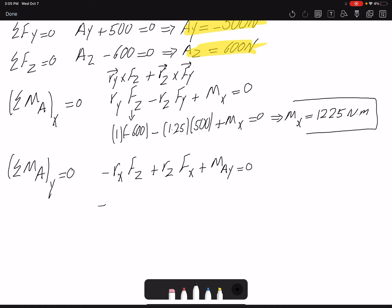Rx here, negative Rx would be negative 0.75, Fz is negative 600, plus for Rz 0.75 times negative 400, plus MY equals zero. Therefore, MY is 750 newton-meters.